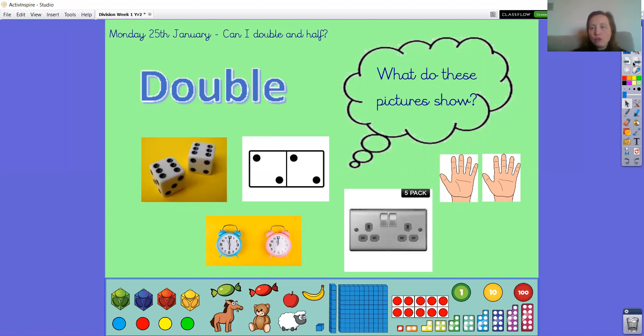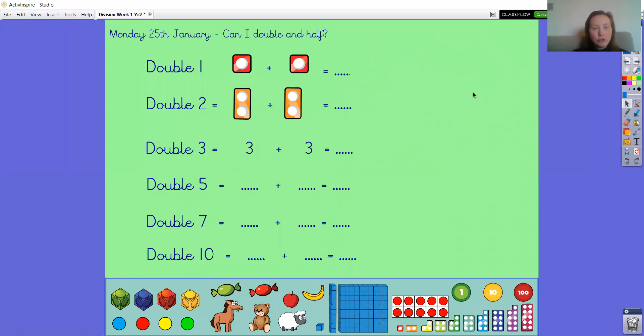So how do we calculate doubling? Double one is the same as one add one. What about double two? Double two is the same as two add two. We know two add two gives us four. So what about double three? Can you work that one out and then have a go: double five, double seven, double ten. Press pause.